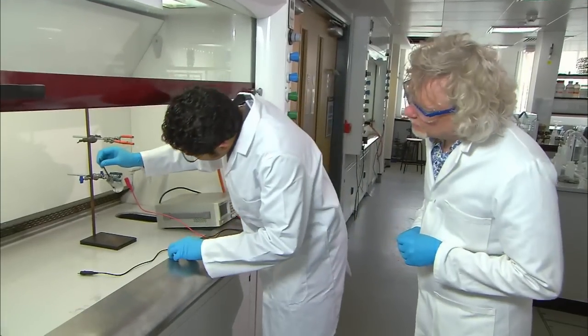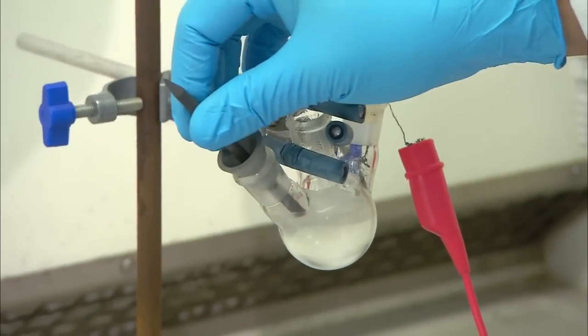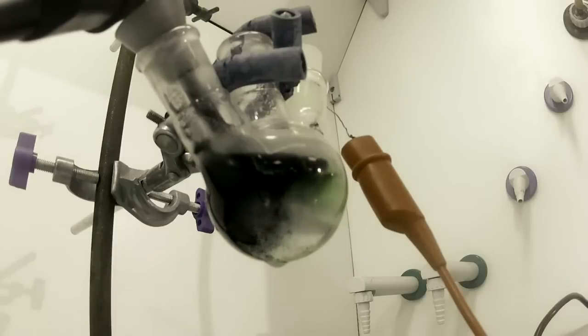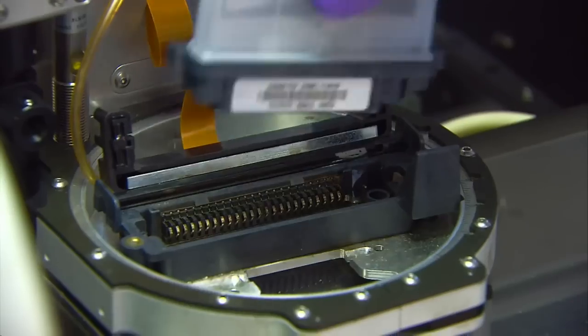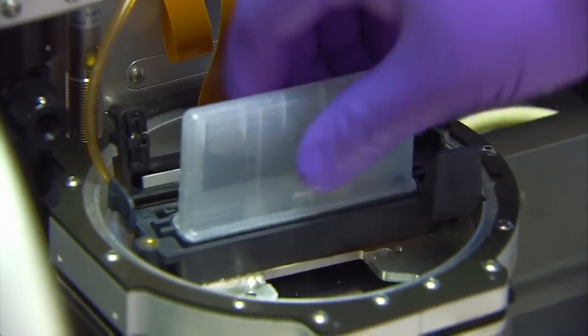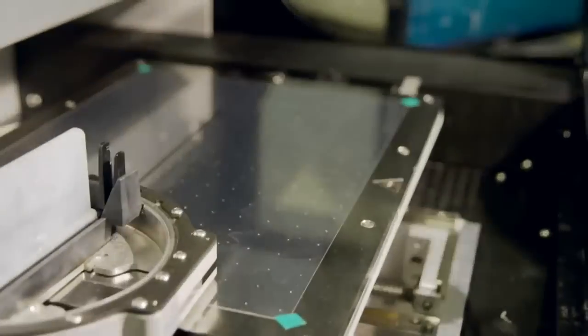To demonstrate graphene's properties, Aravind dissolves graphite, the stuff from your pencil, in a solvent, then injects it into a special printer cartridge. This sprays a thin layer of graphene onto a cellophane backing, which holds the thin graphene layer together.